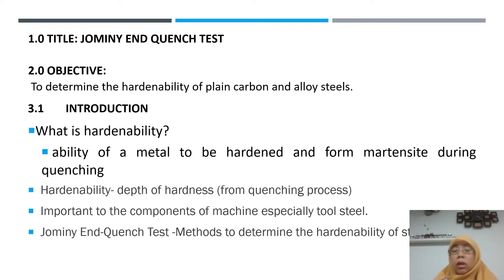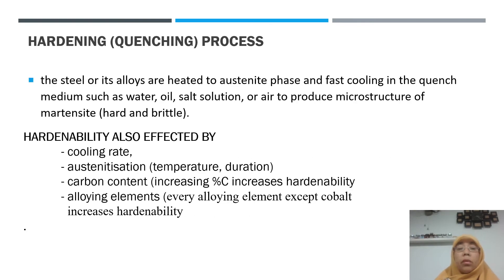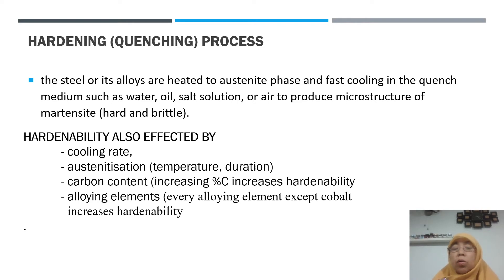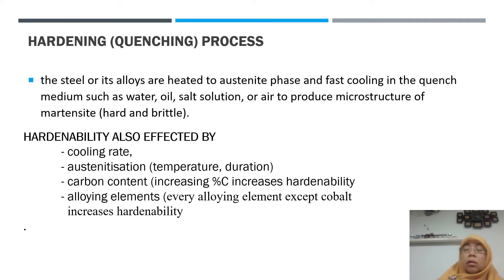The Jomini End Quench Test is a standard method to measure the hardenability of steel, and this lab will introduce you to how to conduct it. Before that, the hardening or quenching process is a heat treatment of steel where we heat from room temperature to the austenite temperature, and then we cool rapidly using a medium — this fast cooling using a quenching medium such as water, salt solution, or air produces a martensite microstructure. Martensite is a very hard and brittle microstructure, and to achieve higher hardness we normally use the hardening or quenching process.